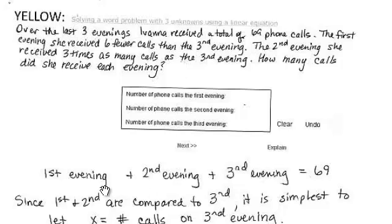Well, the way I start these is I try to write what's going on in words. So the first evening plus the second evening plus the third evening, all those calls equals 69. So far it doesn't really look very mathematical.